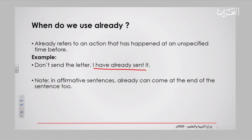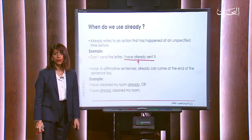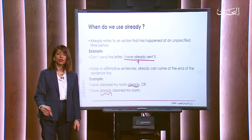An important note: in affirmative sentences, 'already' can come at the end of the sentence too. For example: 'I have cleaned my room already' — here 'already' came at the end. Or it could be: 'I have already cleaned my room' — in the middle of the sentence. So 'already' is flexible; it can come at the end or in the middle.